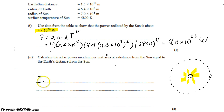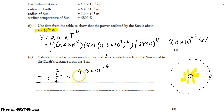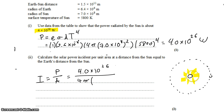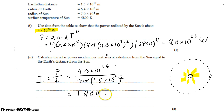The intensity, which is power per unit area, equals 4 times 10 to the 26 watts divided by the area of that shell — the surface area of a sphere, 4πr². This time r is the distance from the sun to the Earth, given as 1.5 times 10 to the 11 meters. Putting that into the calculator gives 1,400 watts per square meter reaching each square meter at the Earth's location.